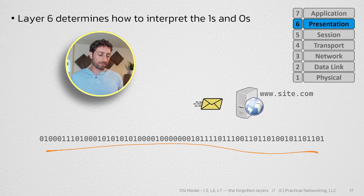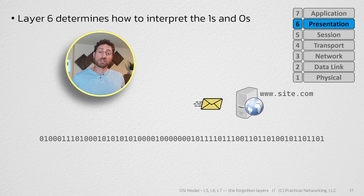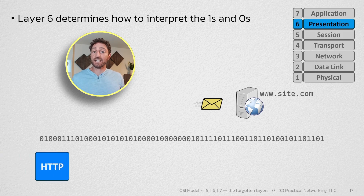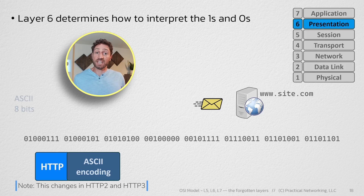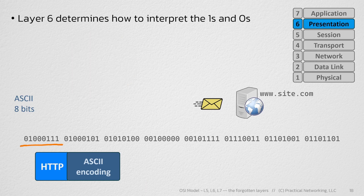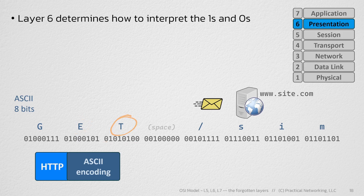That's what layer 6 tells us — what do we do with these ones and zeros. Continuing with HTTP as our example: HTTP uses extended ASCII encoding. Extended ASCII takes all the ones and zeros and groups them into sets of eight bits, interpreting each group of eight bits as a different ASCII character. One combination of ones and zeros translates to the letter G, another to the letter E, another to the letter T, and so on. Layer 6 tells us what to do with the received ones and zeros that have been successfully delivered to the right user session.